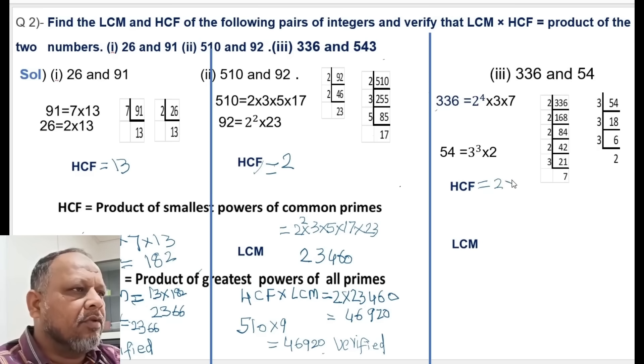The HCF is 2 multiplied by 3 equals 6, because 2 and 3 are the only common primes.